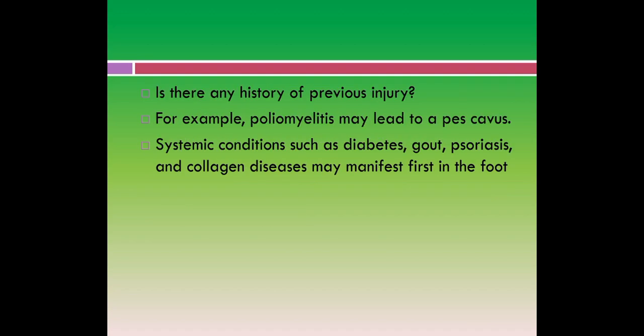We should ask whether there is any history of previous injury. For example, poliomyelitis may lead to pes cavus. Systemic conditions such as diabetes, gout, psoriasis, and collagen diseases may first manifest in the foot. Some symptoms of diabetes are first seen in the ankle joint; gout can show swollen joints first in the ankle and the PIP and DIP joints of the foot; and psoriasis can first be identified by observing the lower leg and ankle.